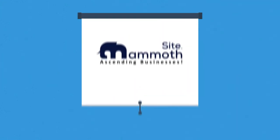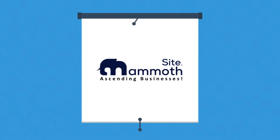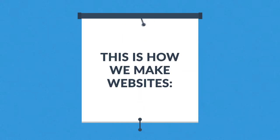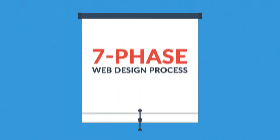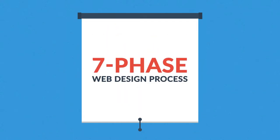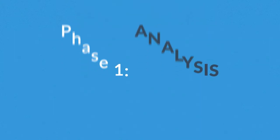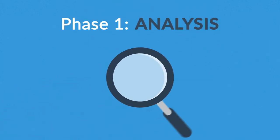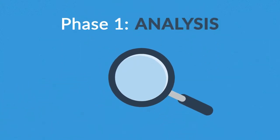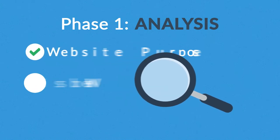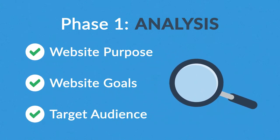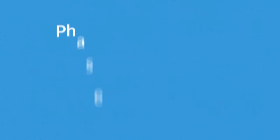That's where we come in. This is how we make websites, by following a seven-phase web design process. Phase one: Analysis. The first step is always about information gathering — identifying things like the website purpose, goals, and target audience.